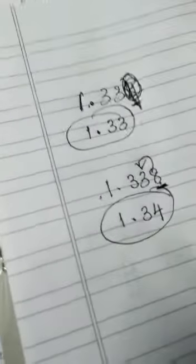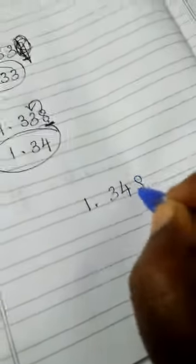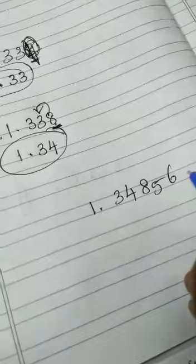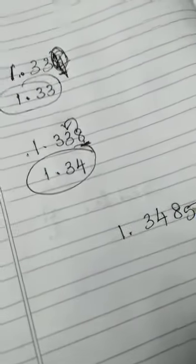For example, when you divide some questions, the answer will come like 3, 4, 8, 6, 5. More numbers will come. So you want to cut the number, you want to remove the number. You first take the three digit number.